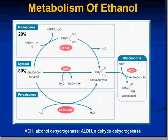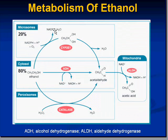Looking at alcohol's metabolism, there are three different levels in the cell: the microsomal level, the cytosol level, and the peroxisomes. The microsomal level is not the majority of the metabolism — the majority is at the cytosol level. At the microsomal level, NADPH is converted to NADP+ while alcohol is metabolized into acetaldehyde.